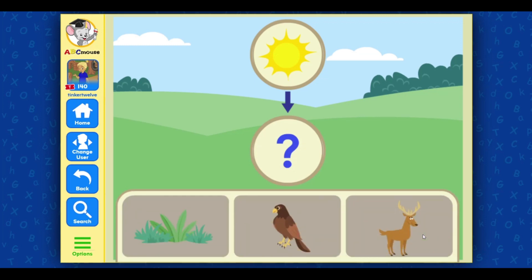This uses sunlight, nutrients from the soil, and carbon dioxide from the air to make food. Grass! Awesome! The grass does use sunlight, nutrients from the soil, and carbon dioxide from the air to make food.